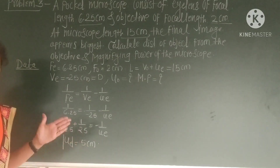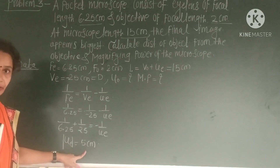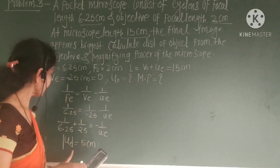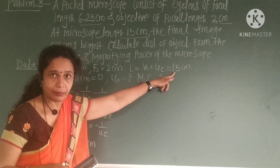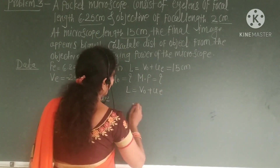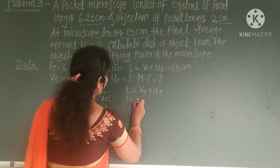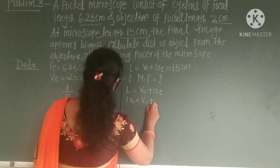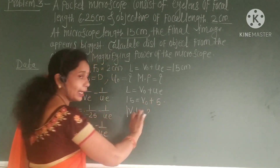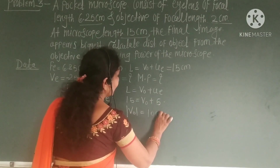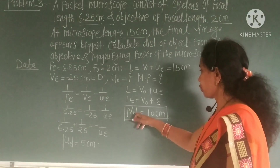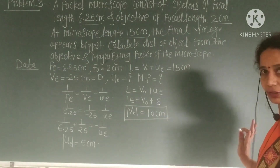Since Ue equals 5 cm and L equals 15 cm, using L equals Vo + Ue: 15 equals Vo + 5, so the magnitude of Vo equals 10 cm. This is the image distance from the objective lens.